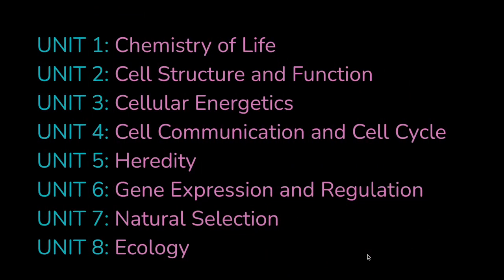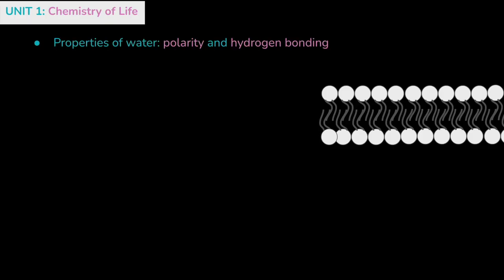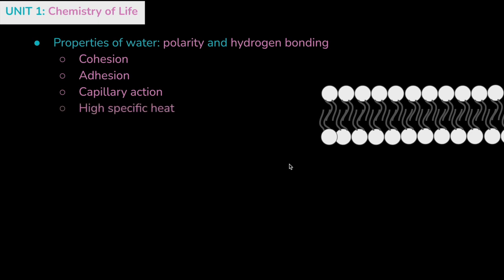The AP Biology course and exam description is made of eight main units. Starting with Unit 1, the chemistry of life. In this unit, we're starting with properties of water. Make sure you know all of the characteristics that make water special, because water and its properties make life possible. All living organisms depend on these properties of water that result from its polarity and its hydrogen bonding. Make sure you know what cohesion, adhesion, capillary action, the high specific heat of water, surface tension, and how it's the universal solvent can all affect life on Earth.